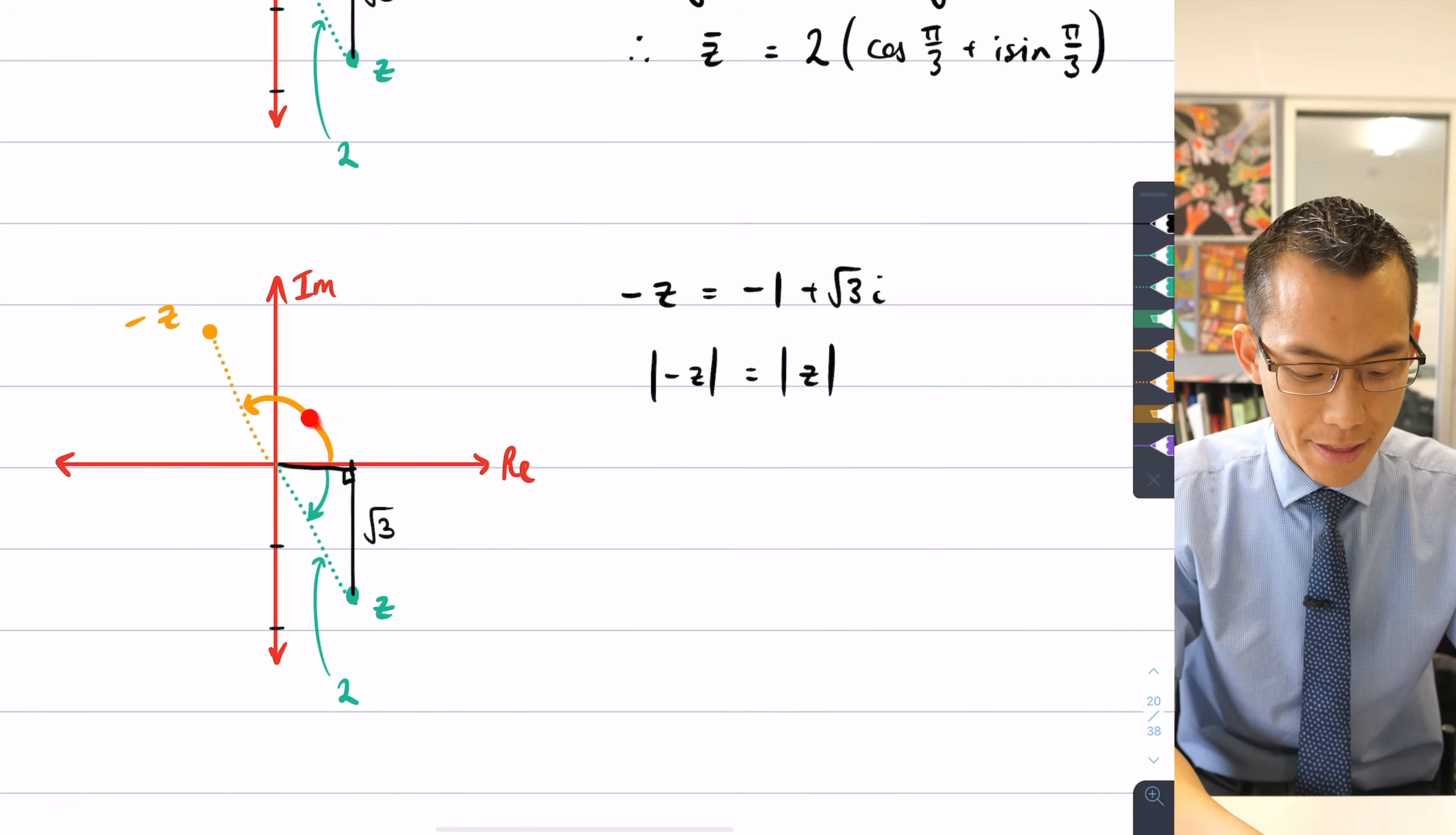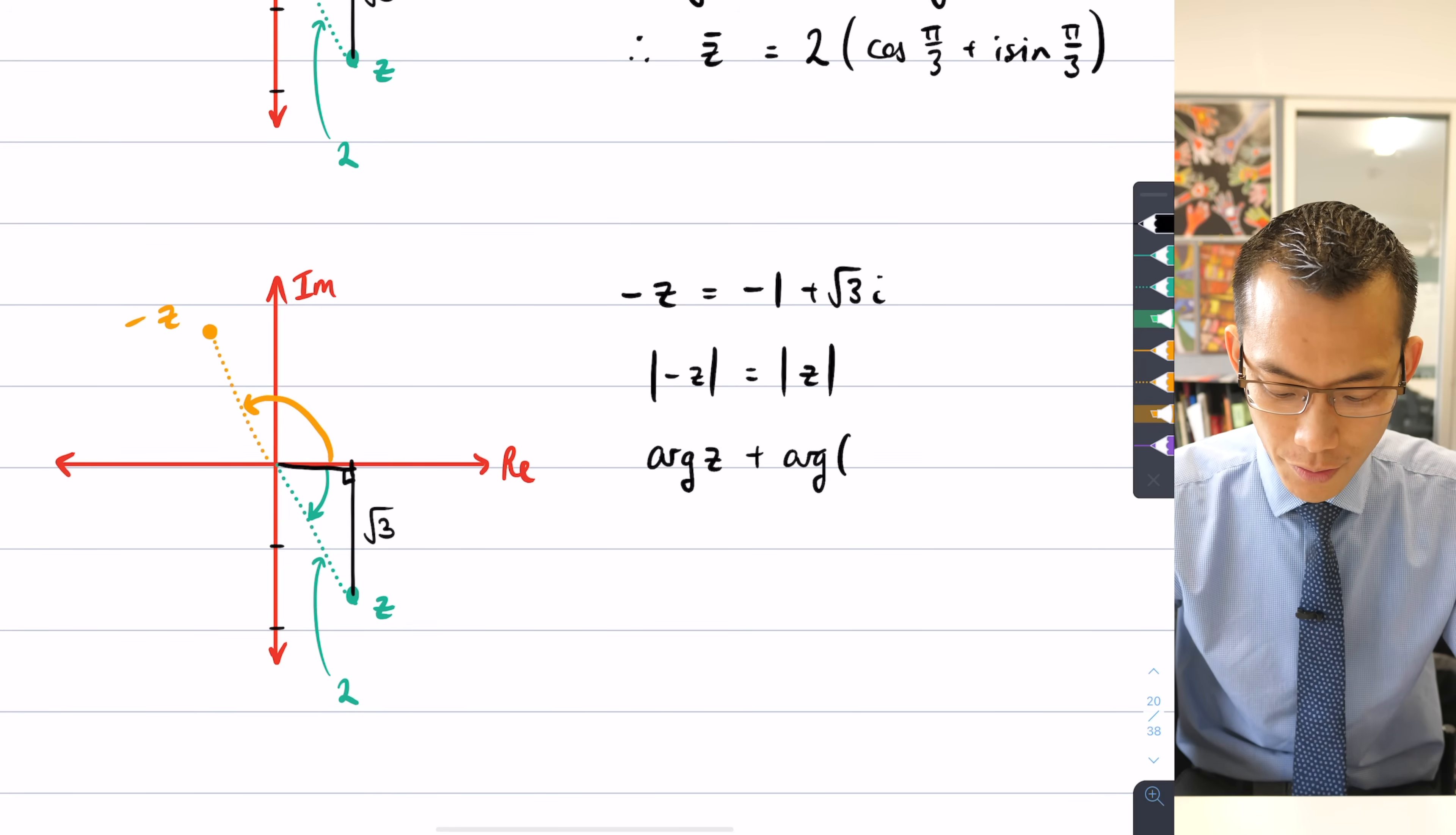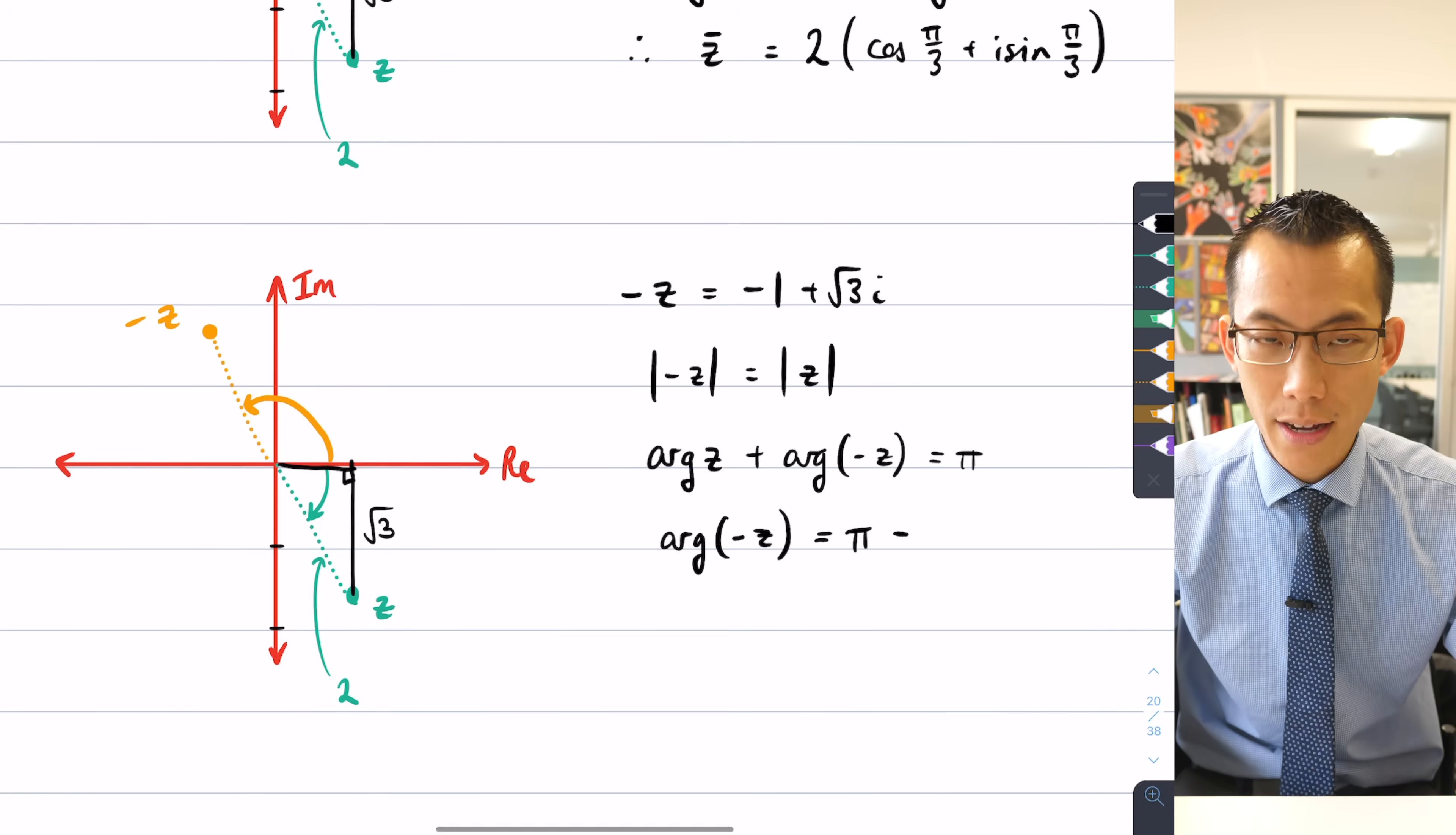So therefore, if this is π/3 and this must be the supplement of π/3, they add up to π radians. Therefore, I can say the argument of z plus the argument of -z, they should equal π. So another way of saying that is the argument that I actually want, the argument of -z is equal to π - arg z.